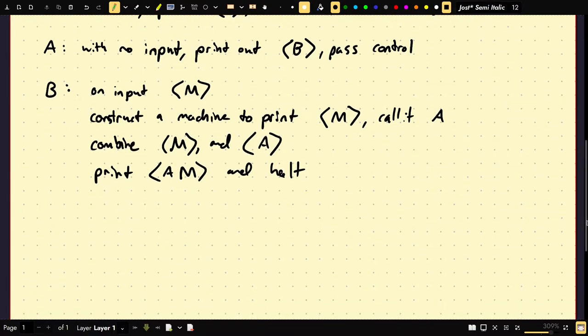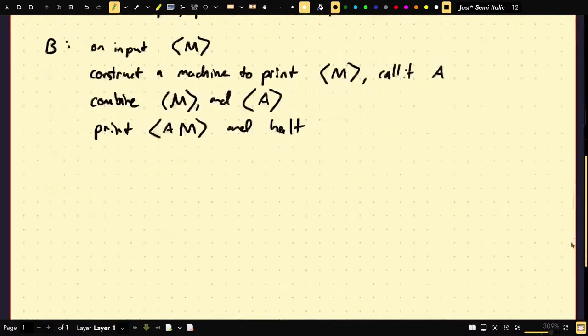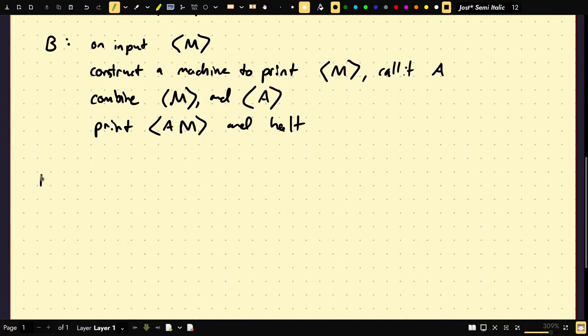So here's again, we're going to do the same thing. Because this is tricky. Let's go through the process exactly what's going to happen. Step 1. A runs. Prints B on the tape. Excuse me, the encoding of B on the tape. And B is here as defined. Which takes as an input, a machine, constructs a machine to print that string and then prints it and halts.